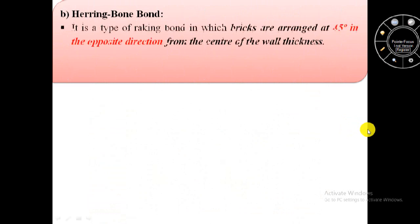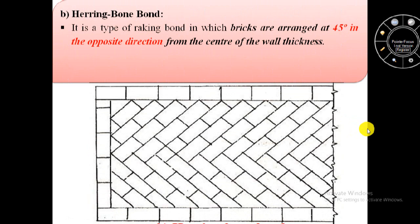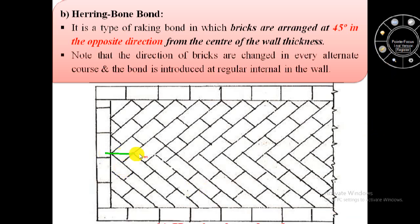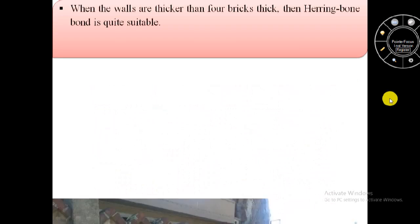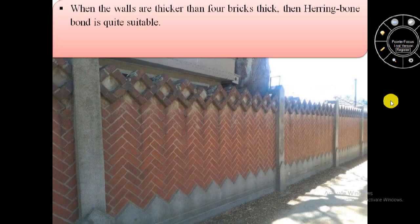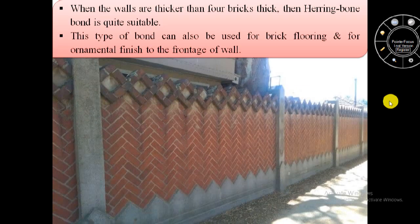The second type of raking bond is herring bone bond, in which bricks are arranged at 45 degrees in opposite directions from the center of the wall thickness. The direction of bricks changes in every alternate course, and the bond is introduced at regular intervals in the wall. Herring bone bond is suitable when walls are thicker than four bricks thick. This type of bond can also be used for brick flooring and for ornamental finish to the front edge of a wall.